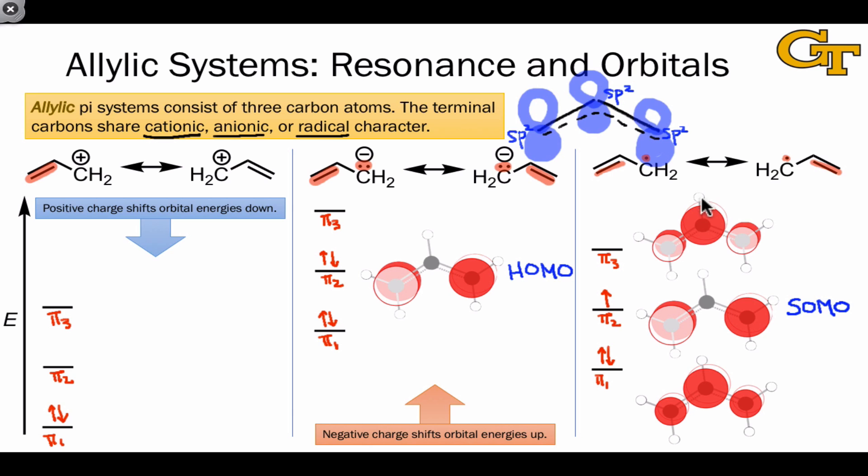The orbital shapes here, again, are identical to the shapes in the allyl radical and anion case, but once again, the most important orbital in the allylic cation is pi 2. This is because it's the lowest energy unoccupied molecular orbital, or LUMO. The allyl cation is an electrophile, and so the lowest energy unfilled orbital is the most important orbital in this molecule when it comes to reactivity.